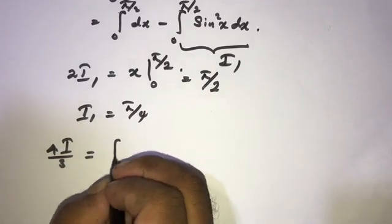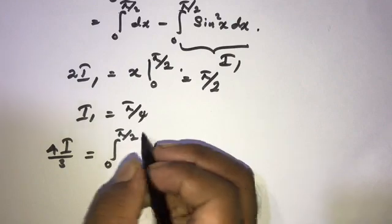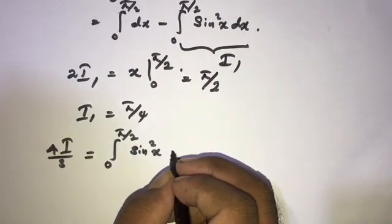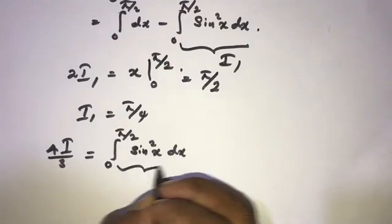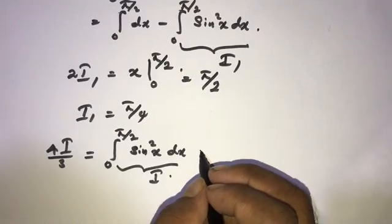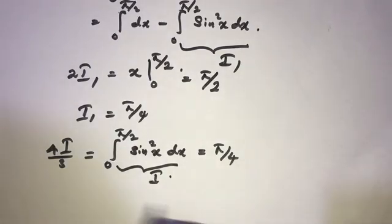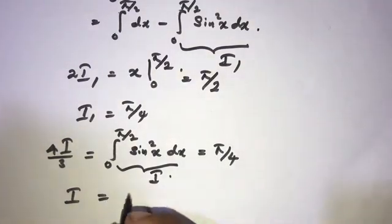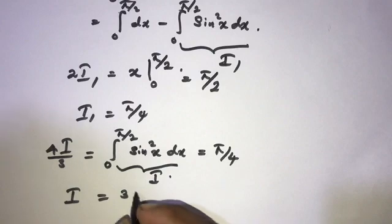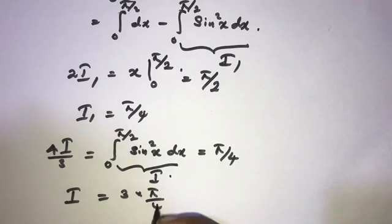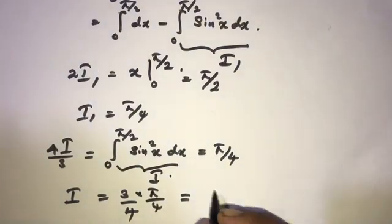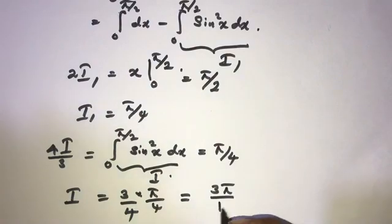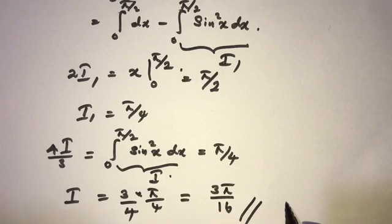Now, returning to our previous equation: 4I/3 equals the integral from 0 to 5π/2 of sine squared x dx, which is I₁, and I₁ equals 5π/4. So isolating I: I equals 3 times (5π/4) divided by 4, giving the answer I = 15π/16. If you like this video, please subscribe to this channel. Thank you for watching.